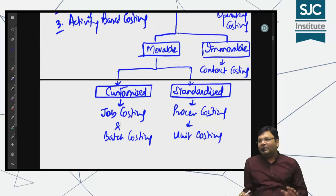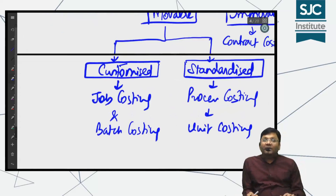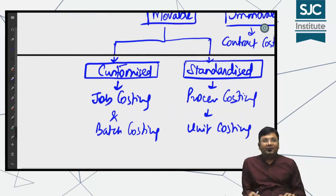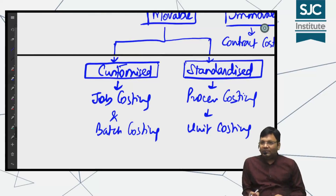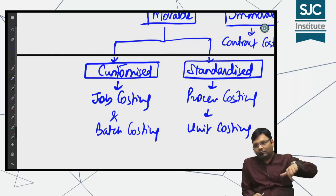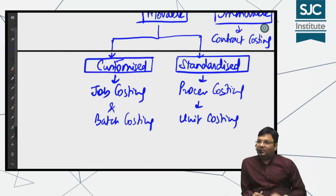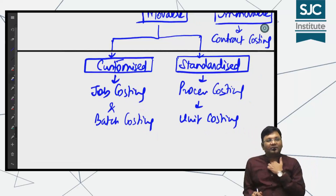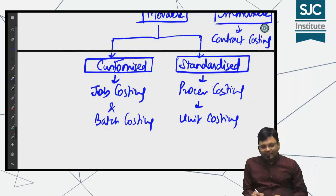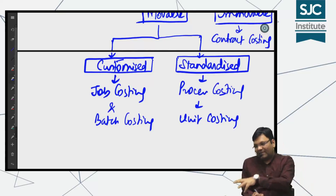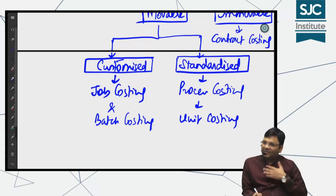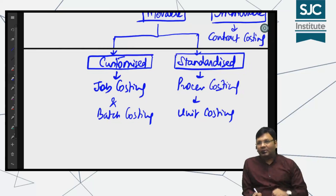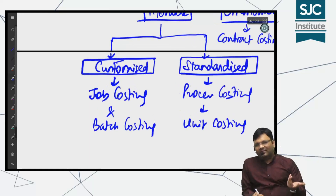Unit costing मतलब होता है एक-एक unit बनाना। For example, एक house बनता है — आप 100 houses एक साथ machine में डाल कर नहीं बना सकते — तो there is unit costing। Batch costing तब होता है जब आप bulk में बनाते हो, like customized printing jobs। Job costing means printing jobs भी उसमें आएंगे।